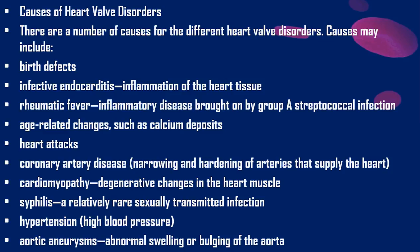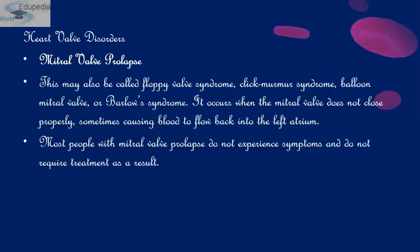Aortic aneurysm is an abnormal swelling or bulging of the aorta, which is the largest artery directly connected to the heart. There are three types of heart valve disorders. First is mitral valve prolapse — the bicuspid valve is also known as the mitral valve. When it prolapses, the condition may also be called floppy valve syndrome, click murmur syndrome, balloon mitral valve, or Barlow syndrome.